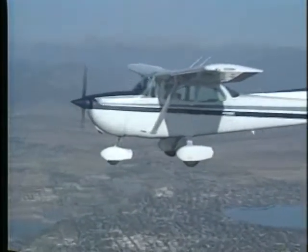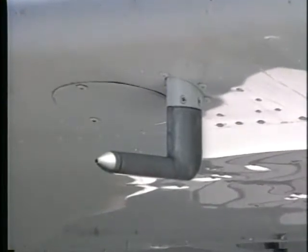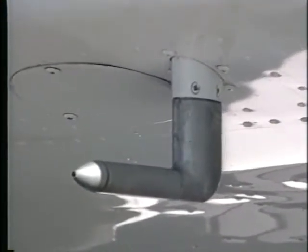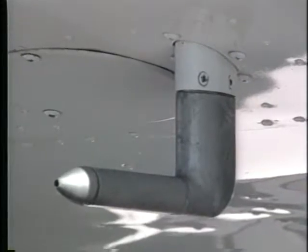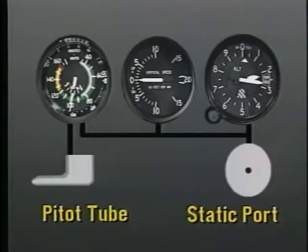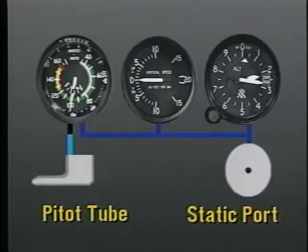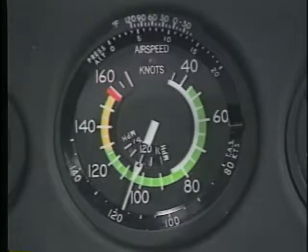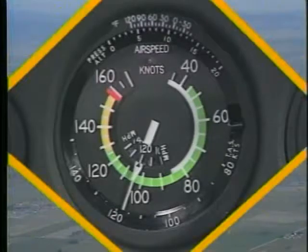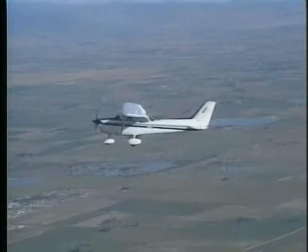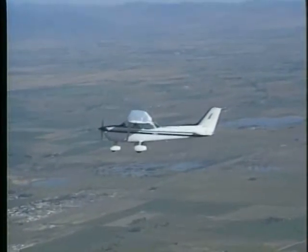During flight, the pressure surrounding the airplane enters the instruments through a static port, which is positioned in an area of relatively undisturbed air, such as the side of the fuselage. At the same time, ram air pressure enters through a small hole at the front of a pitot tube, which is mounted so it is exposed to the relative wind. While all three instruments use the ambient air pressure provided by the static port, only the airspeed indicator uses ram air pressure from the pitot tube.